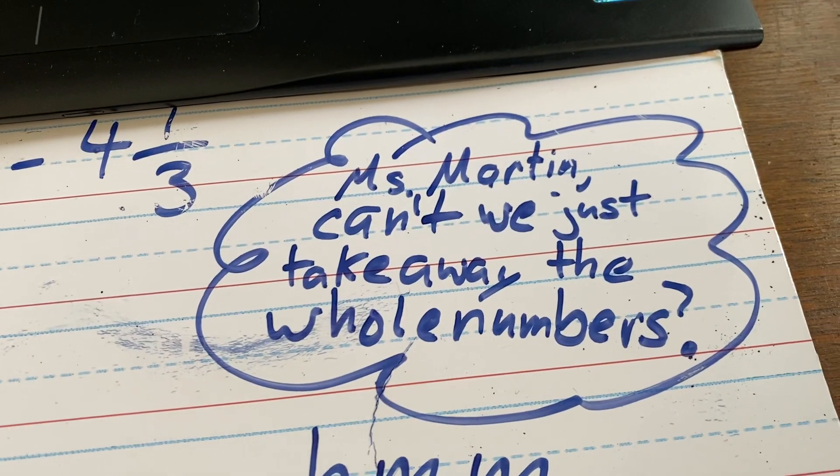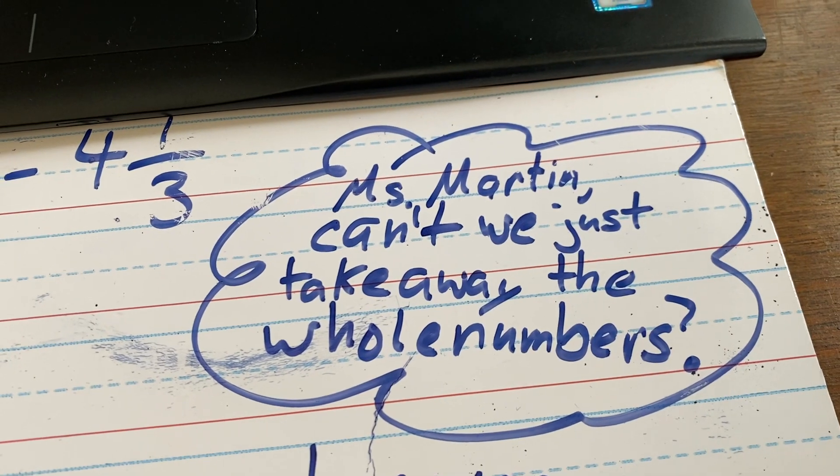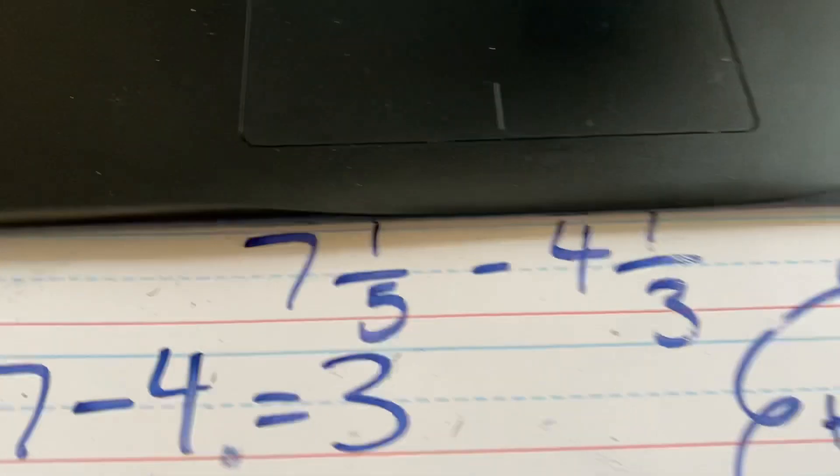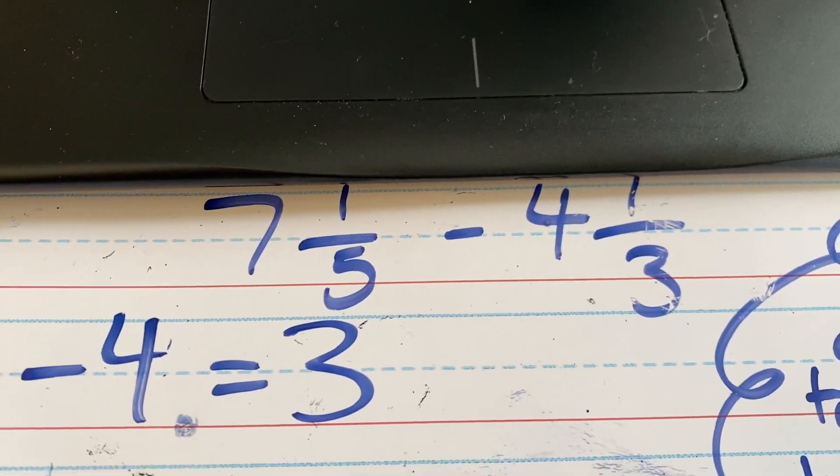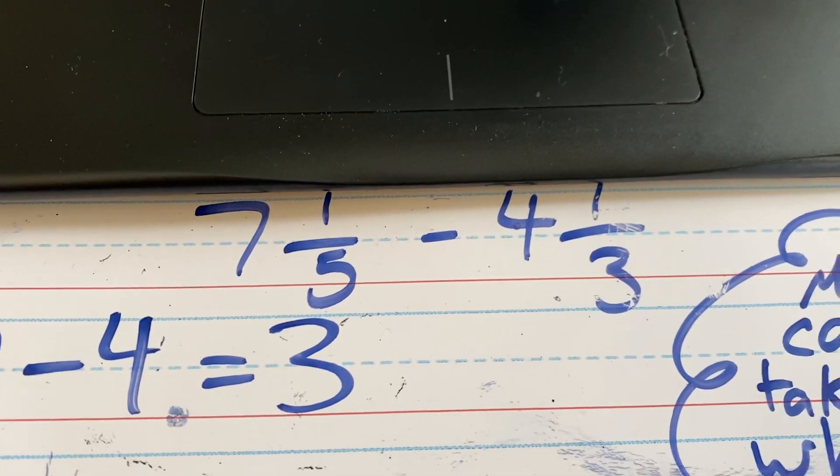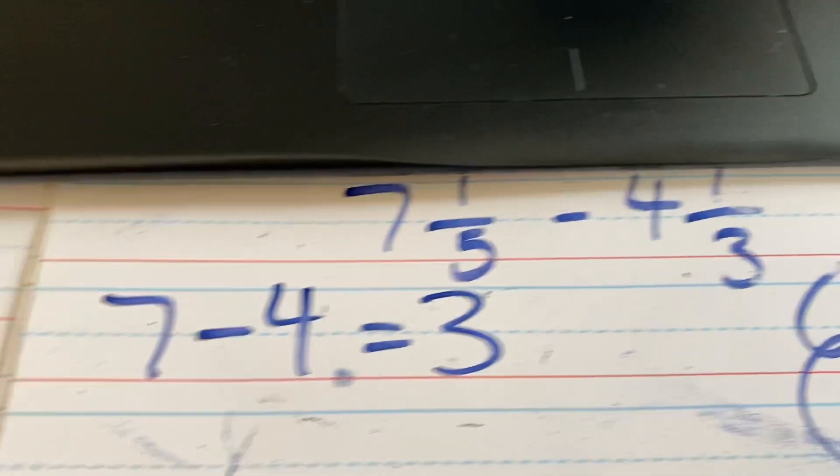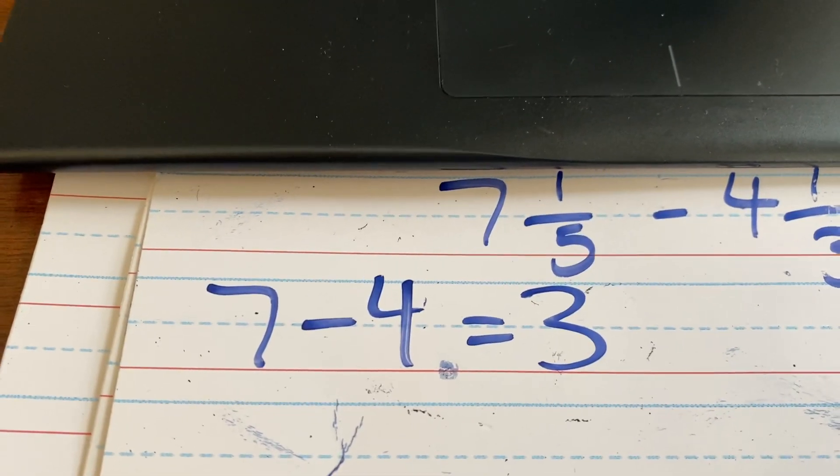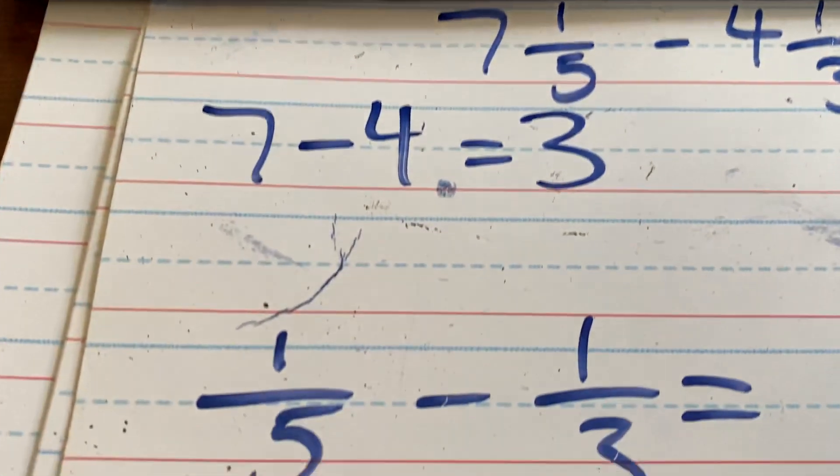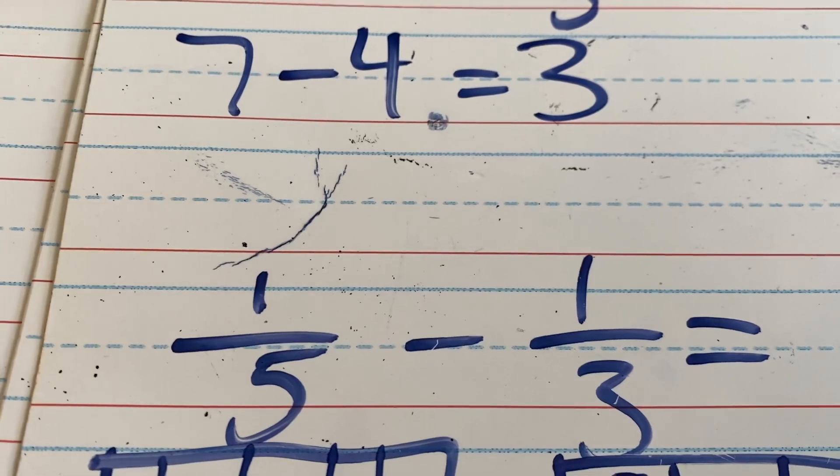Here's what I saw. Ms. Martin, can't we just take away the whole numbers? So, thinking back to a couple lessons ago, we thought we can simplify this if we just add 7 plus 4 when we were talking about the addition ones. This time, we're subtracting, and their thought process, and I've seen this on a lot of homework papers, was 7 minus 4 is 3, and then we're left with 1/5 minus 1/3.